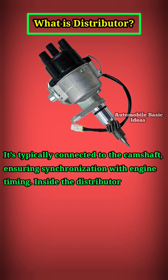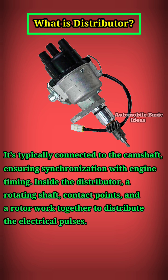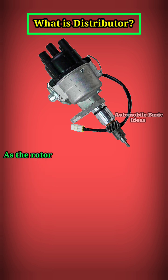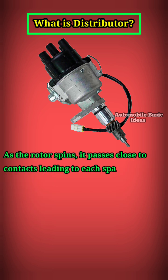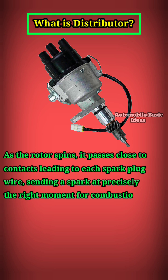Inside the distributor, a rotating shaft, contact points, and a rotor work together to distribute the electrical pulses. As the rotor spins, it passes close to contacts leading to each spark plug wire, sending a spark at precisely the right moment for combustion in each cylinder.